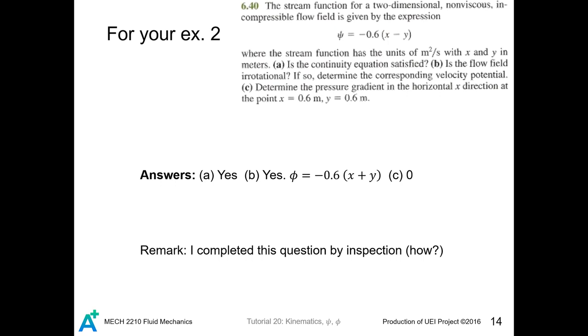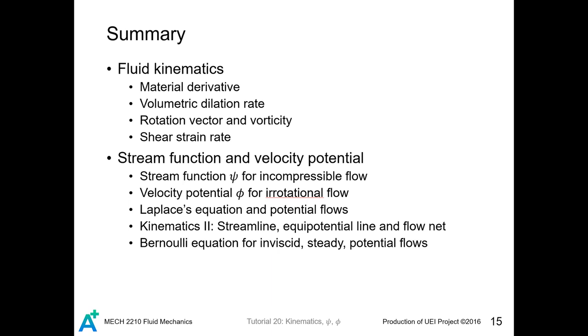So I leave this problem for your exercise. Although the question changed the velocity potential to stream function, you can follow a similar procedure to complete this question. But in fact, I completed this question without writing a single thing. With my calculation, I can finish this question. It is because the velocity field is just a constant. The stream function have just the linear terms in x and y. Since the velocity is constant, then by Bernoulli equation, the pressure everywhere is uniform. So I immediately know that the c part is zero.